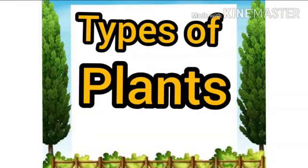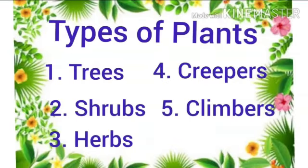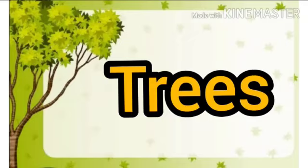Types of plants. Students, there are five types of plants. Number 1, trees. Number 2, shrubs. Number 3, herbs. Number 4, creepers. And number 5, climbers.